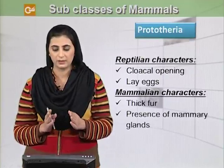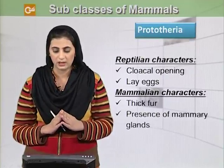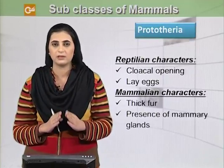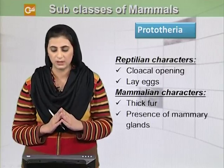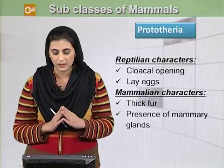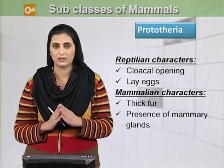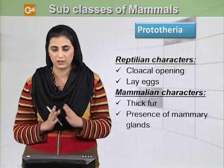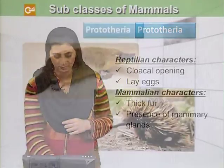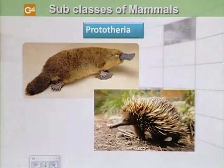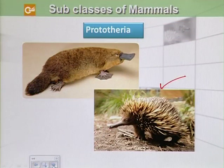Prototheria are more reptilian. They have a cloacal opening instead of separate openings for the digestive system and urogenital system, and they lay eggs. Their mammalian characters are that they have thick fur and there is a presence of mammary glands. The examples of Prototheria are the duckbill platypus and spiny anteater.